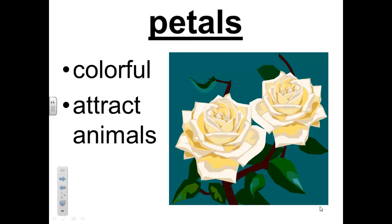The petals are often the most colorful tissues of a flower. Animals may be attracted to a plant by the petals. Not every flower has showy petals. The tassels at the top of a corn plant and ears of corn are flowers.